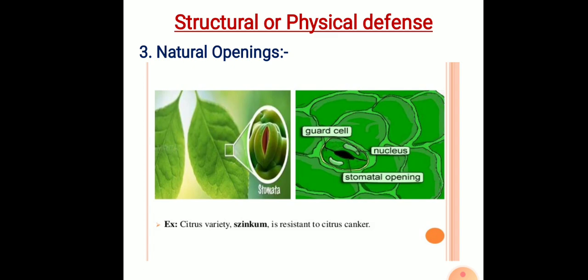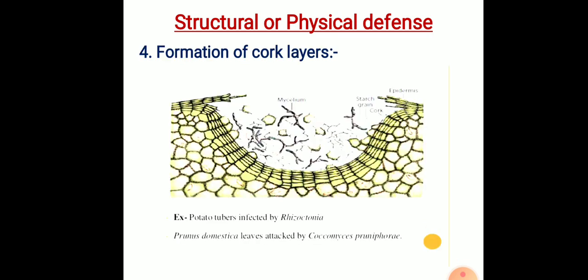Small lenticels keep the pathogen outside the host and the infection is not initiated. The next structural defense mechanism is formation of a cork layer, which is very important. The entry of several pathogens is checked by the formation of several layers of cork in the host plant beyond the point of infection. This happens as a result of stimulation of the host cells by chemicals secreted by the pathogens. The cork layer acts as a barrier and checks the entry of the pathogen because of the thickness and strength of the suberized walls of the cork cells.